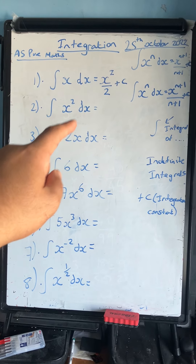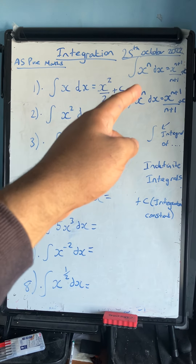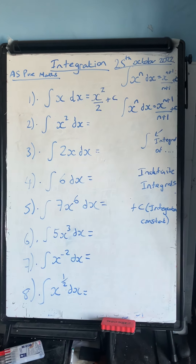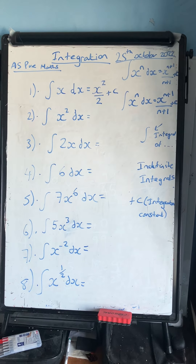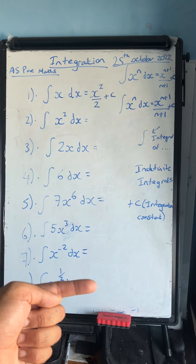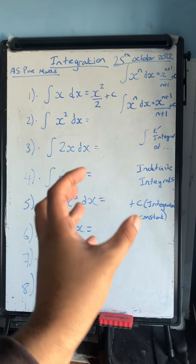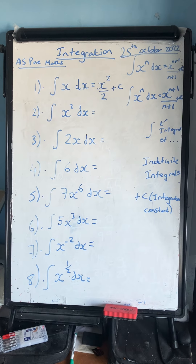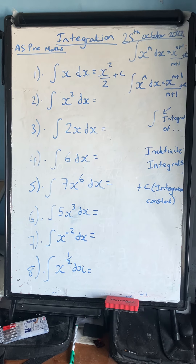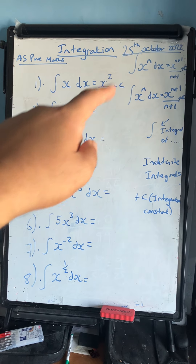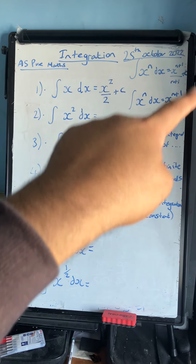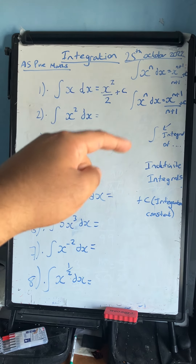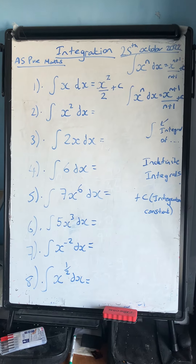Now, how we actually integrate: the integral of x to the n dx equals x to the n plus 1, divided by n plus 1, plus the integration constant c. In short, you add 1 to the power and divide by the new power, then add the constant of integration c.